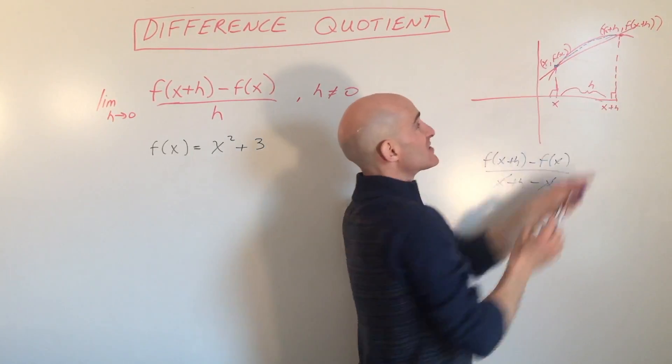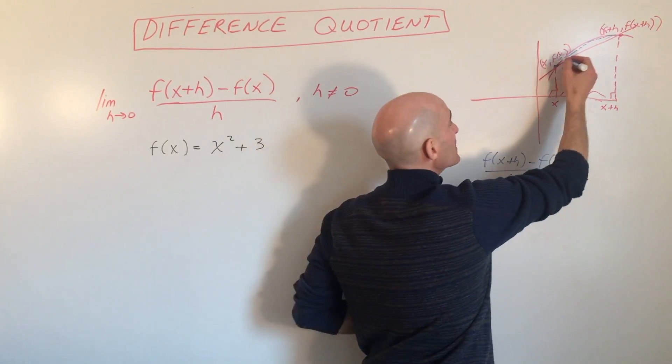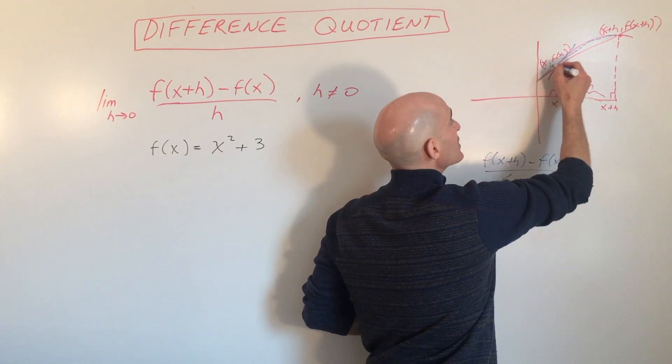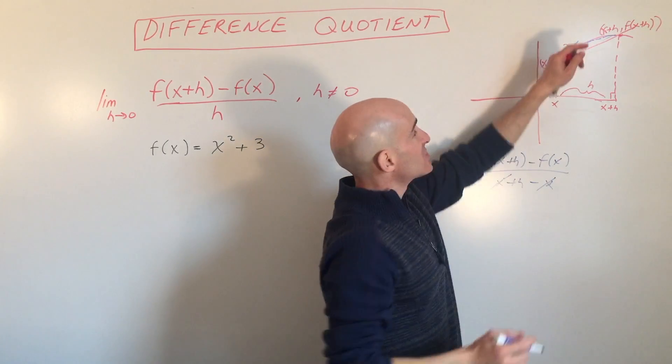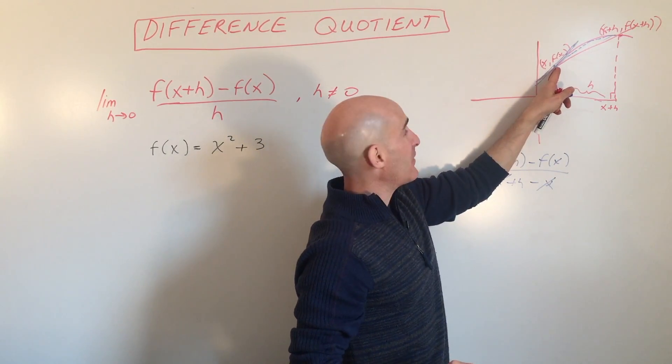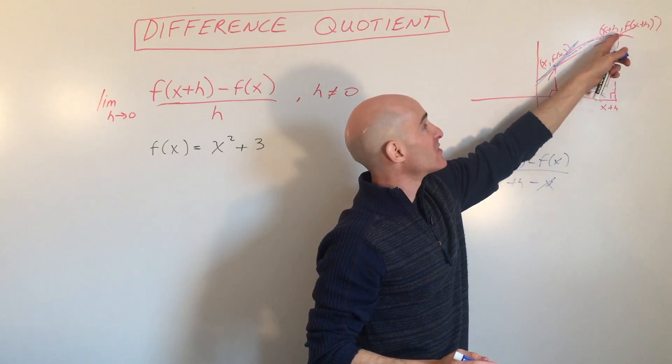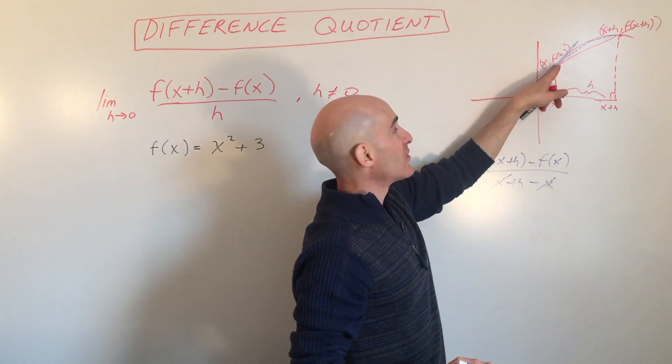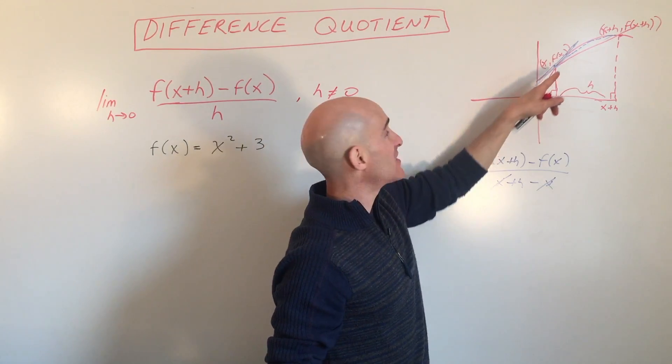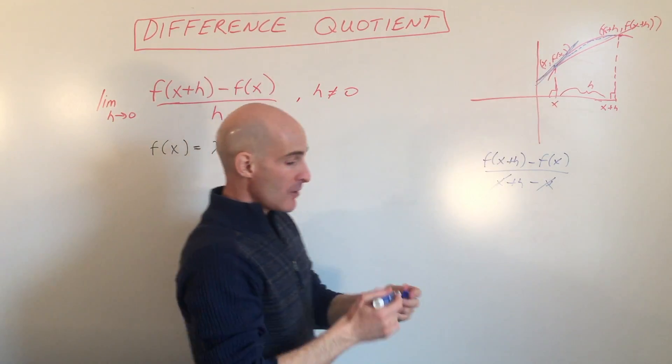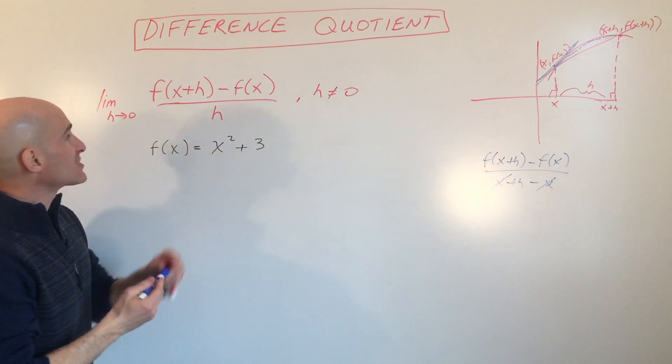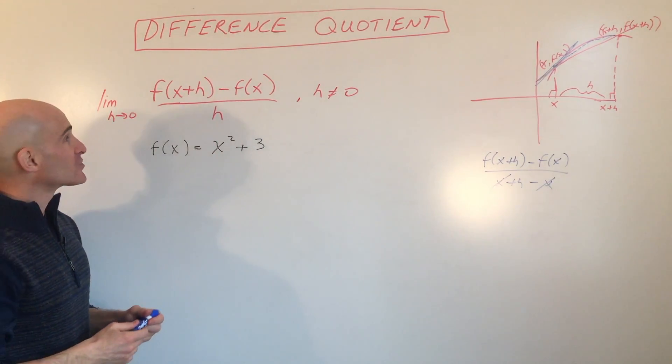So instead of getting this average rate of change, this secant line, you're actually getting the instantaneous rate of change, which is the slope at that point. We're using the slope formula with limits to bring these points closer together until they coincide. But what we're going to talk about here is how to find the difference quotient.